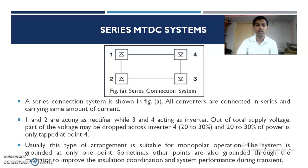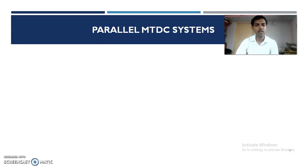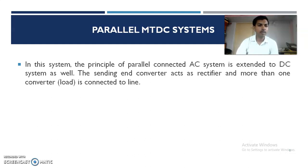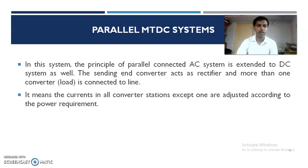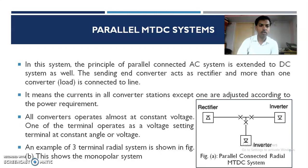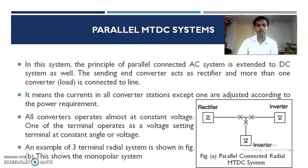In parallel MTDC systems, the principle of parallel-connected AC systems is extended to DC systems as well. The sending-end converter acts as a rectifier, and more than one converter load is connected to the line, meaning the current in all converter stations except one is adjusted according to power requirements. All converters operate at almost constant voltage, as is fundamental in parallel circuits — same voltage across each component. One of the terminals operates as a voltage-setting terminal at a constant angle or voltage.